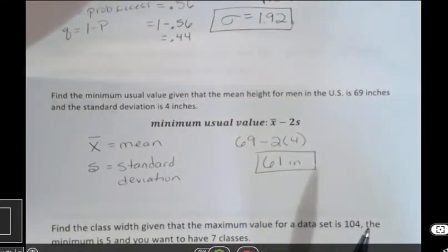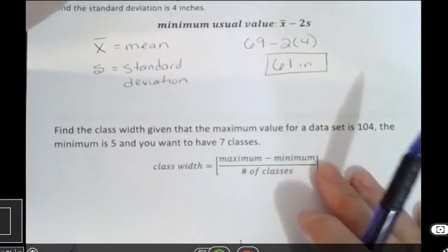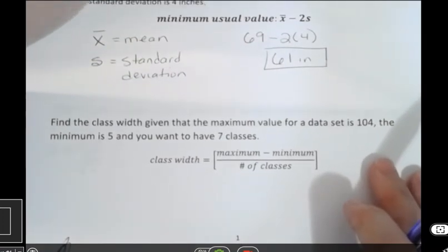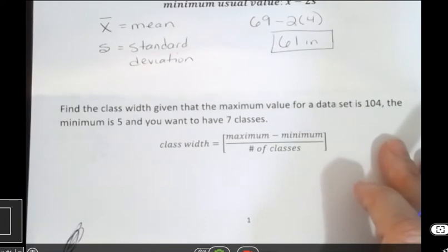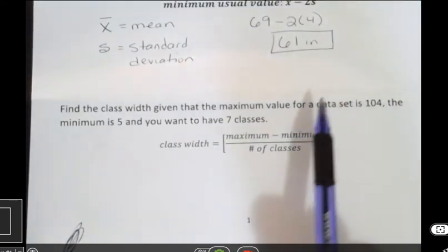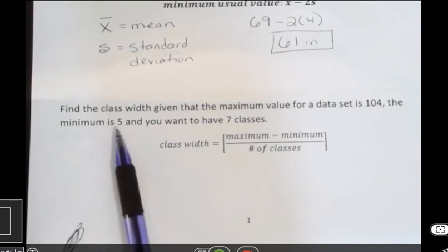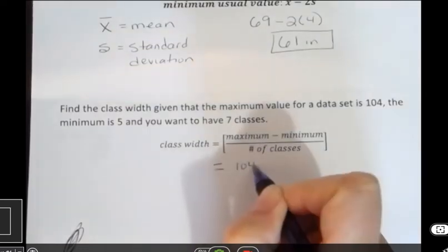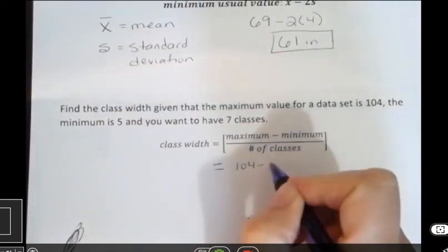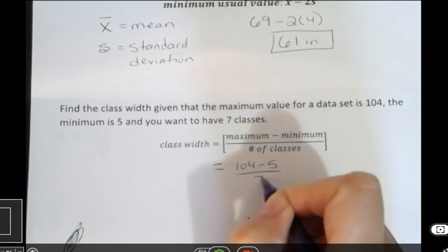Okay. So that's just using that formula. And then this one is also not a difficult formula, but it has a little trick to it, so I wanted to show you that. Find the class width given that the maximum value for the data set is 104, and the minimum is 5, and you want 7 classes. So I'm going to do class width maximum of 104, and minimum of 5, and we want 7 classes.